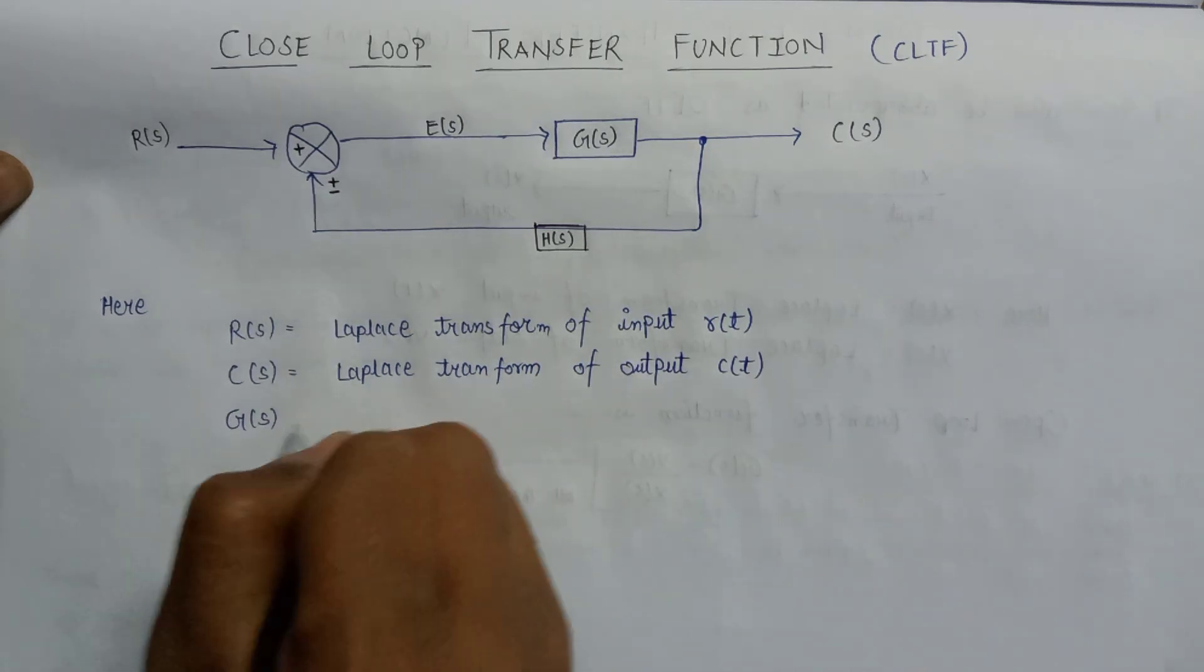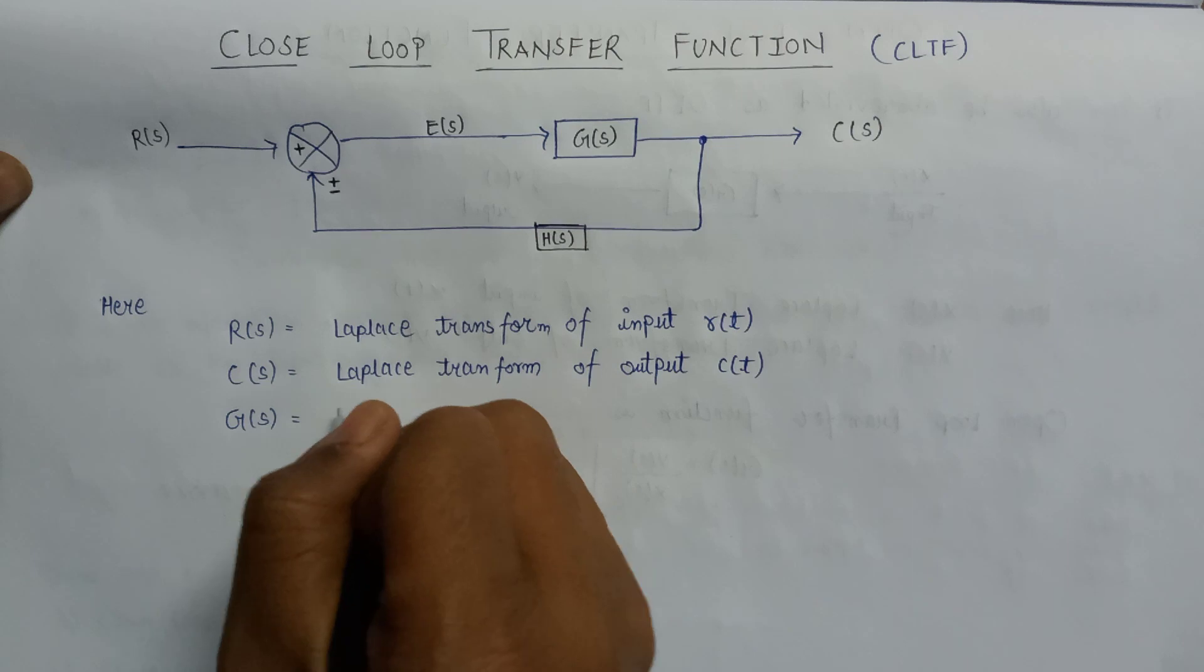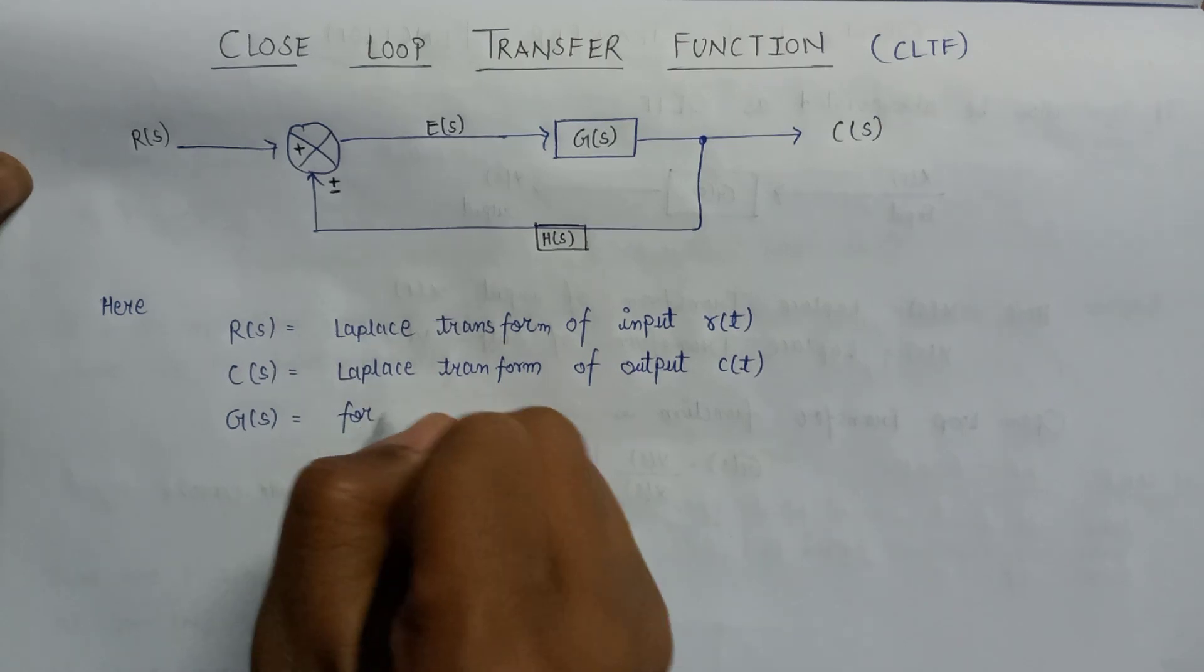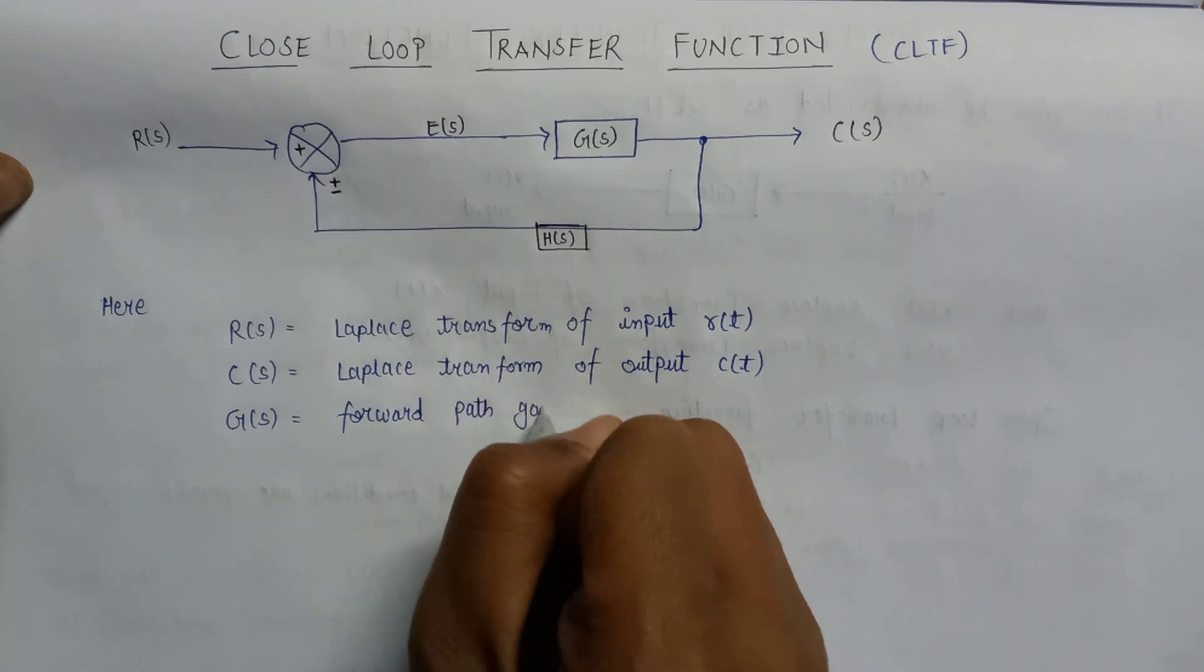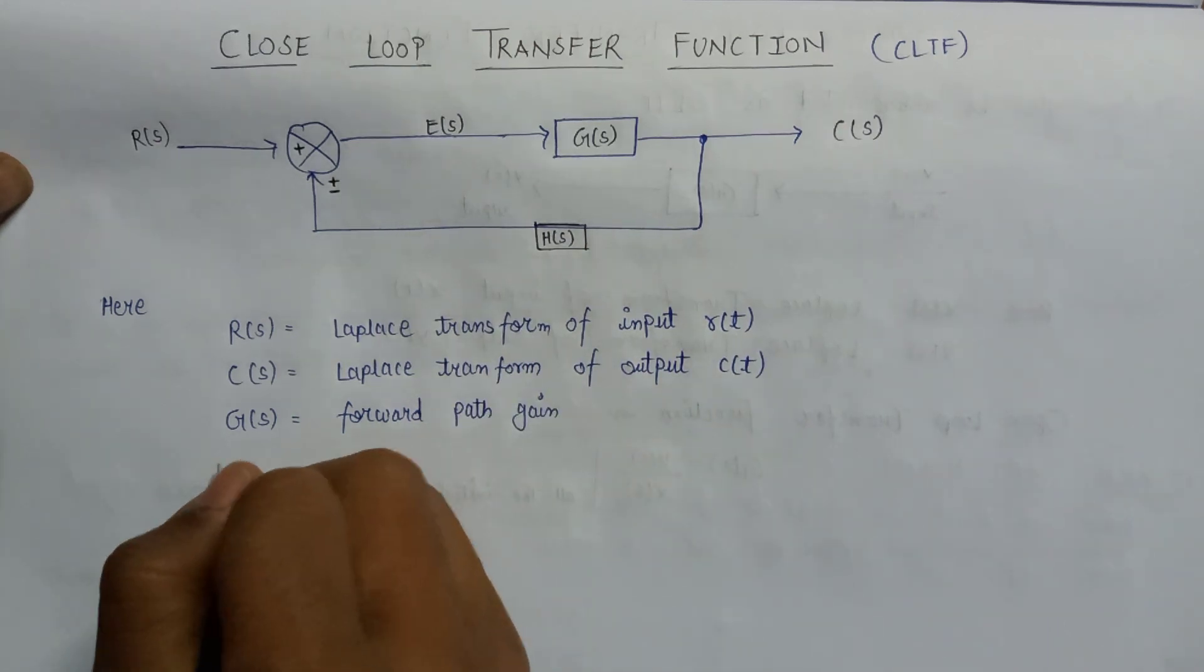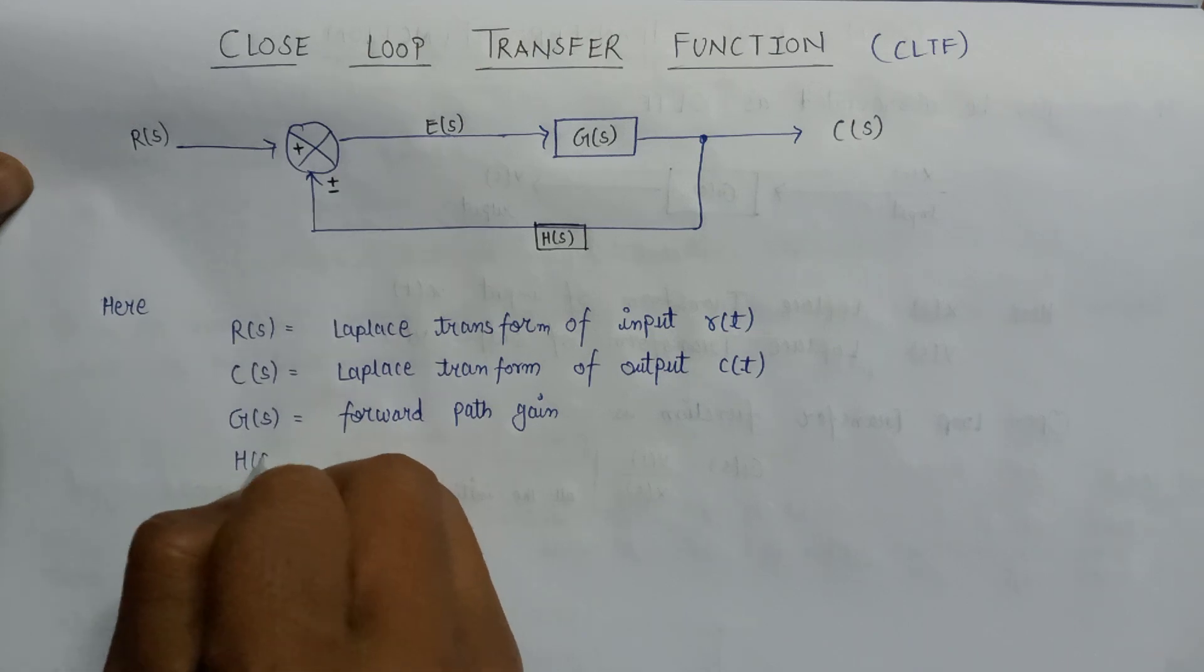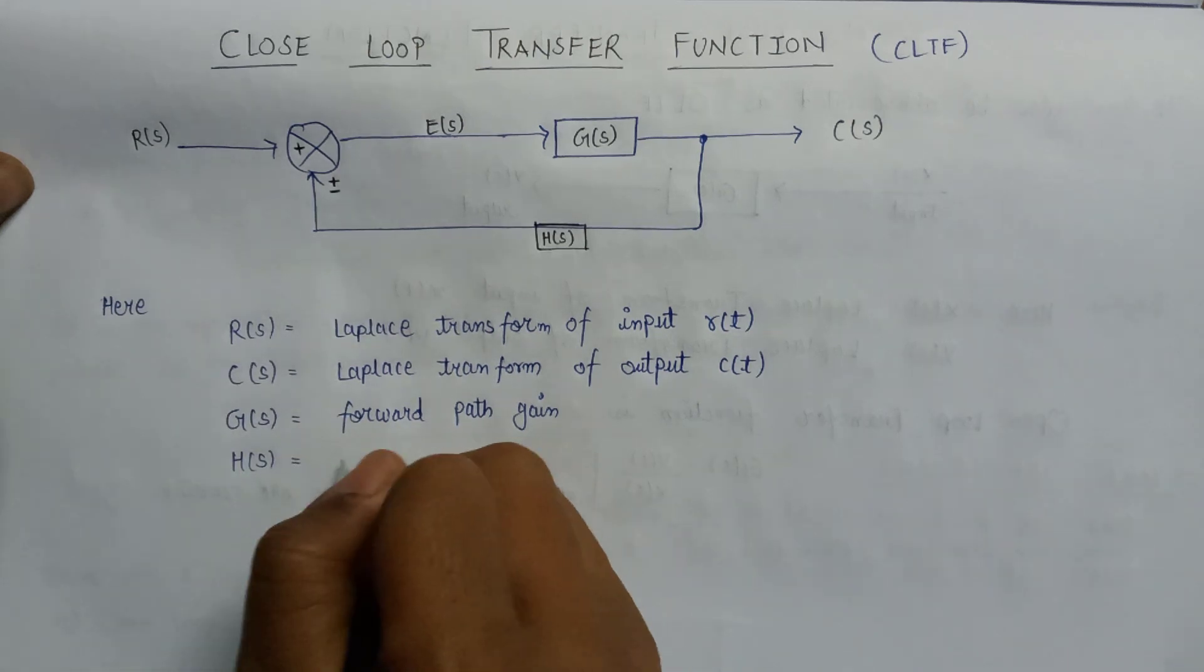G(s) is forward path gain. H(s) is feedback path gain.